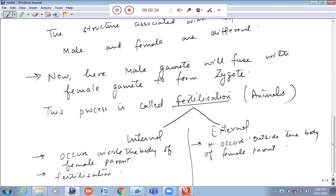External fertilization occurs outside the body of the female parent. Here fertilization is not sure.